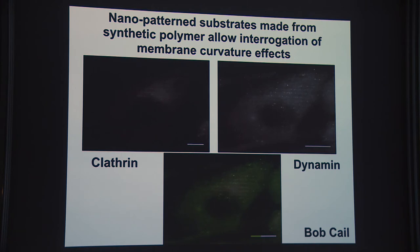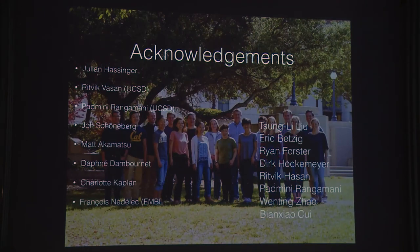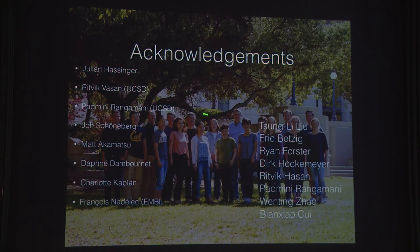Our hypothesis is that curvature is a signal that attracts proteins—there's some rate-limiting step where initial curvature helps recruit curvature-sensing proteins, and so on. If you're interested in this, I have some iBiology talks just posted online. These are the people who did the work; I tried to mention everyone. It's a joint lab with my wife Georgiane Barnes, who is here in the audience. Thank you very much for your attention.